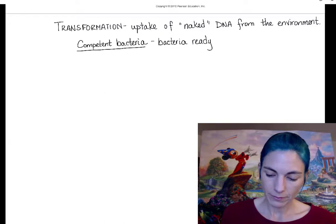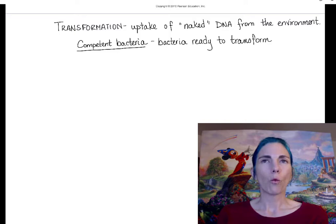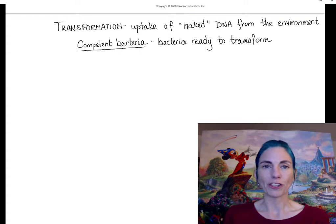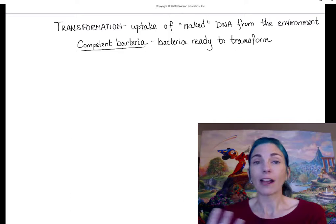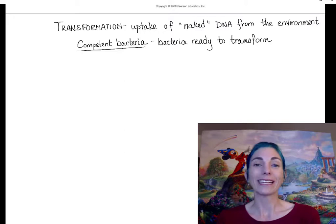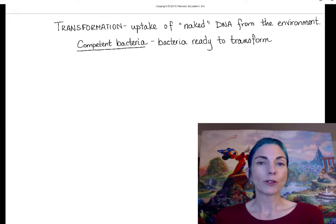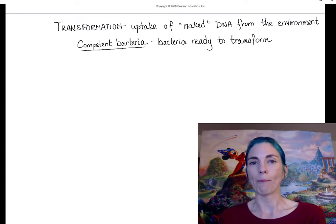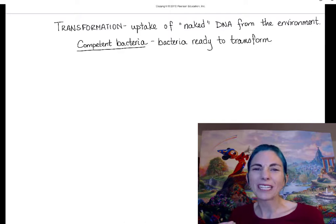Most bacteria are not in a competent state. What types of environmental conditions might prompt a bacterial cell to become competent and create a big opening to bring in new DNA? Chances are the DNA they bring in won't be helpful at all — but like winning the lottery, there's a one-in-a-million shot that they might get DNA that's really a jackpot, like DNA for a capsule. Transformation invokes considerable risk: not only are you opening yourself up and subject to lysis, but you're also bringing in DNA that probably won't be helpful — so you're only going to do it if you're really desperate.